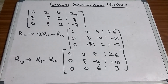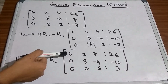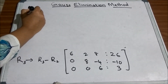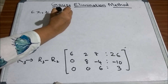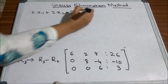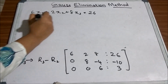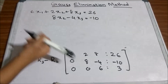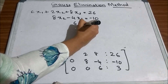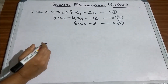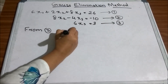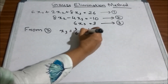Now we do back substitution by converting the rows back into equations. The system becomes: 6·x1 + 2·x2 + 8·x3 = 26, 8·x2 − 4·x3 = −10, and 6·x3 = 3. From equation 3 we get x3 = 3/6, which equals 1/2.